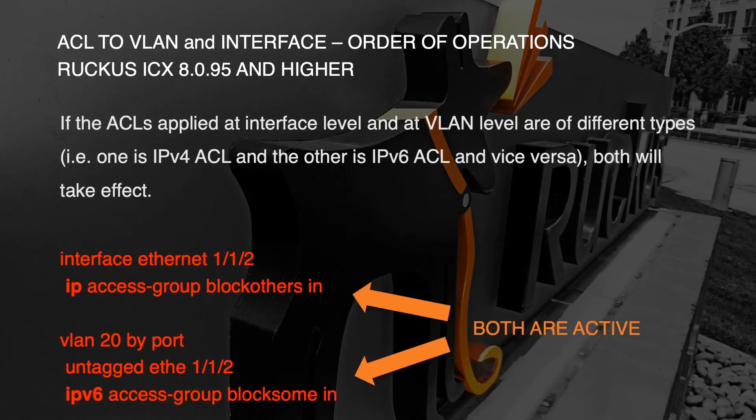And number three, lastly: if the ACL applied to the interface and a different ACL applied to the VLAN level are different types, then both of them apply — neither one takes precedence. So in this case, we've got an IPv4 ACL on the physical interface and an IPv6 ACL on the VLAN. In this case they're both going to take effect, so there's no overlap.